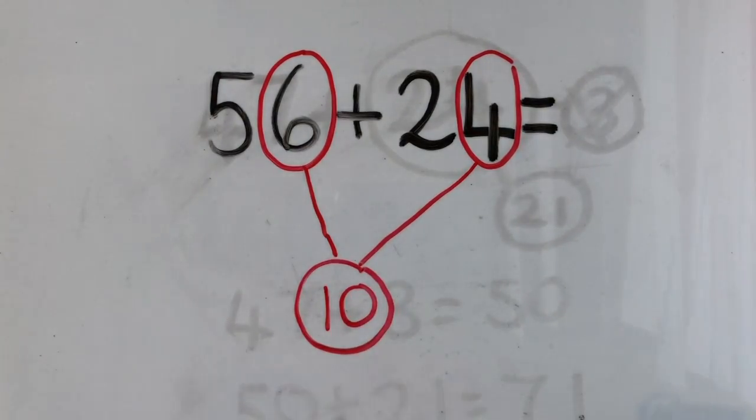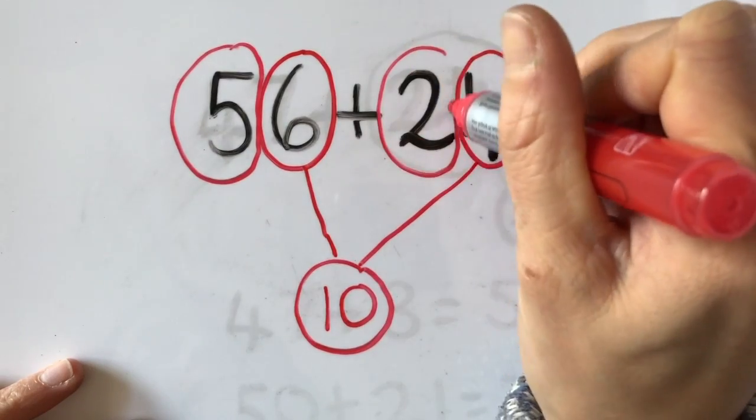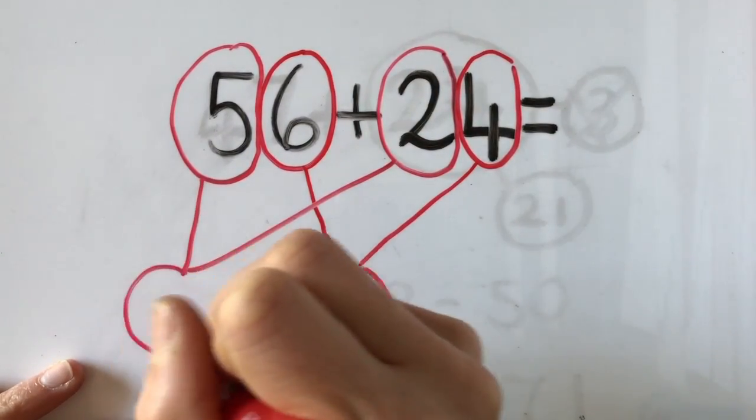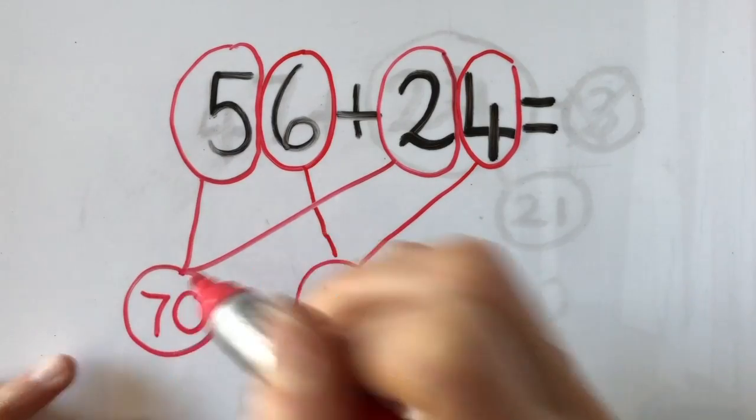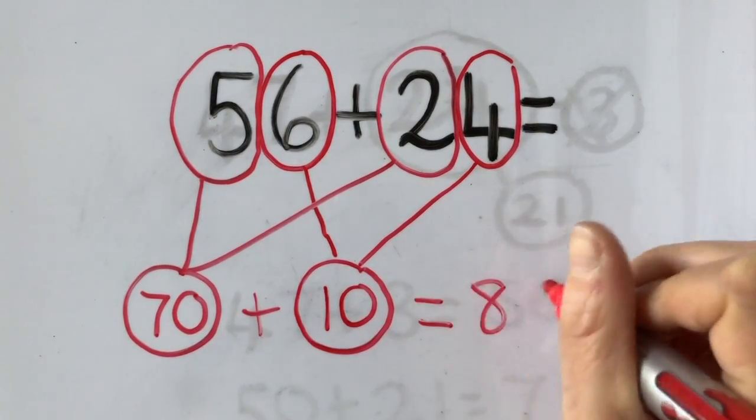So I've now added those together. I can now add my two 10s and my five 10s, and that gives me 70. I can really easily calculate 70 add 10, because that gives me 80.